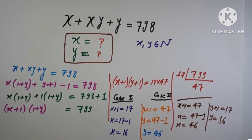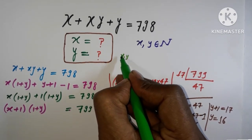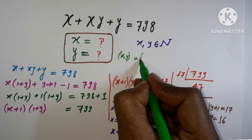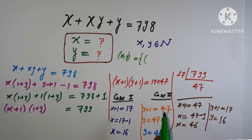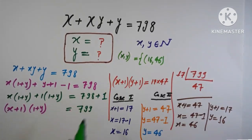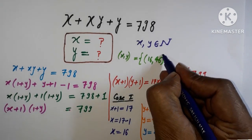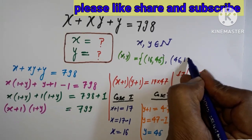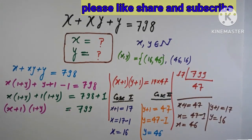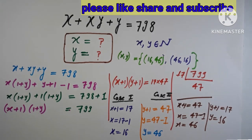So we have two solution pairs: (x, y) equals (16, 46) and (x, y) equals (46, 16). These are the two results for our equation. Thank you so much for watching — for the latest upcoming videos, please subscribe to the channel.